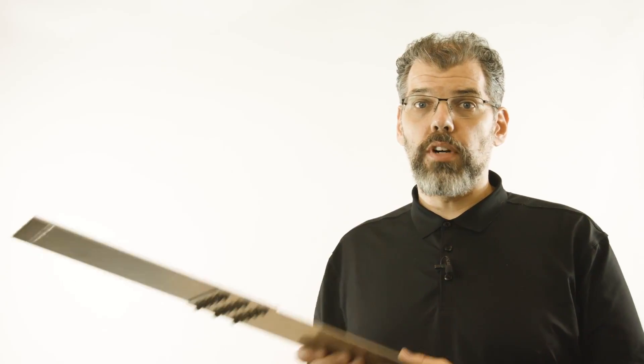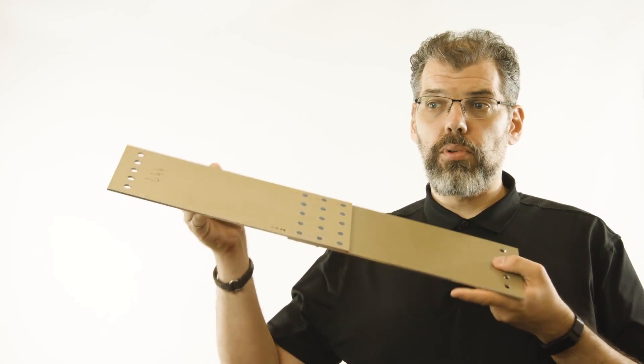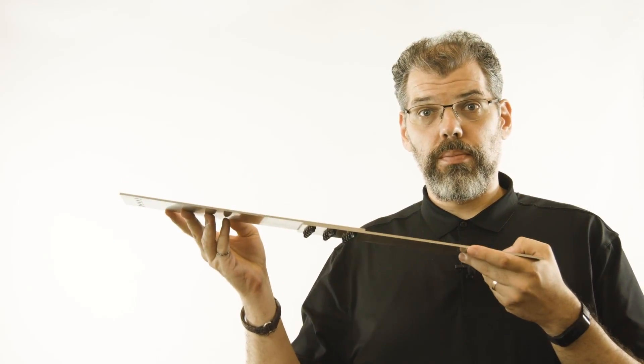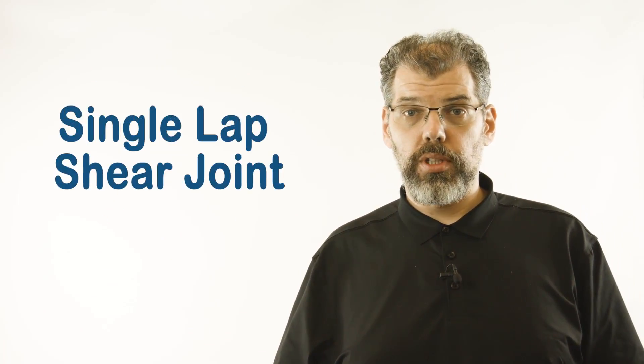We will center our discussion around the simplest form of a shear joint, a single overlap of sheets containing several rows of fasteners like the one shown here. This joint is known as a single lap shear joint.